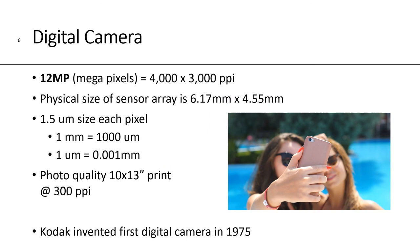For image capture, we talk about a digital camera that often has a megapixel size. In this case, we have a 12-megapixel camera, which means we have about 4,000 by 3,000 pixels. The actual physical size of that sensor is very small — maybe 6.2 by 4.6 millimeters — meaning each pixel size is just 1.5 microns. There are 1,000 microns in a millimeter. If you wanted to make a photographic-quality print at 10 by 13 inches, you would typically use around 300 pixels per inch, so a 12-megapixel camera would do that for you. As a footnote, Kodak invented the very first digital camera back in 1975.